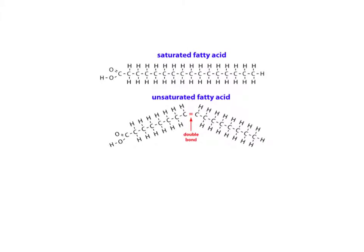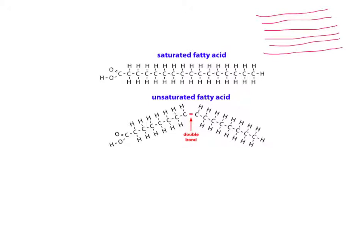There are two forms of fatty acid. A saturated fatty acid has an unbroken chain of single carbon-carbon bonds. Because saturated fatty acids are straight, large numbers of them can line up together, allowing many hydrogen bonds to form between the strands. This requires a lot of energy to break up, so saturated fats tend to be solids at room temperature.